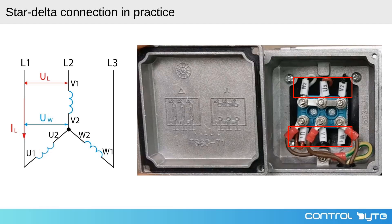The image on the right shows the actual motor terminal box, which contains six terminals corresponding to the ends of the three windings: U1, V1, W1 for one end, and U2, V2, W2 for the other end. In this example, the motor is in a star configuration. The connectors link U2, V2, and W2 together forming the star point, while U1, V1, and W1 are connected to the three-phase power supply.